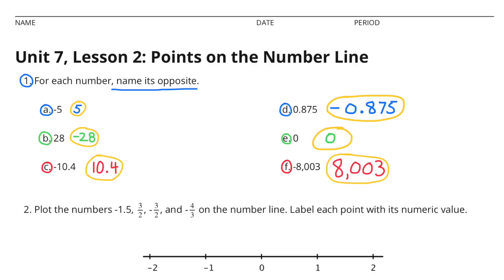C: Negative 10 and 4 tenths. The opposite of negative 10 and 4 tenths is positive 10 and 4 tenths, or 10 and 4 tenths. D: 875 thousandths. The opposite of 875 thousandths is negative 875 thousandths.